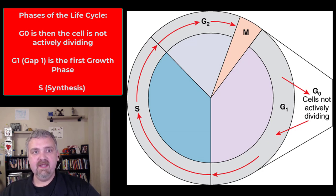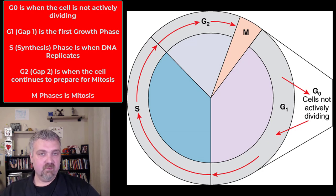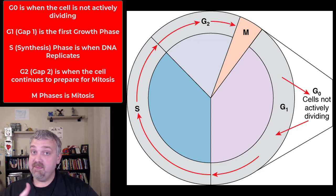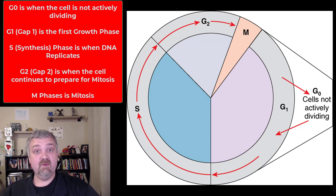Let's start with G0. If a cell is in a resting state and not actively dividing, either because it stopped dividing temporarily or permanently, it's going to be in what's called G0.